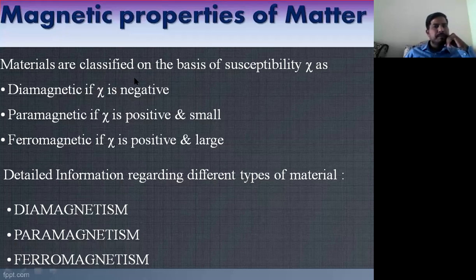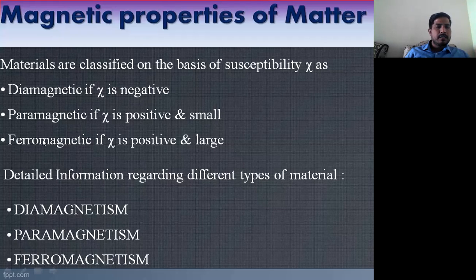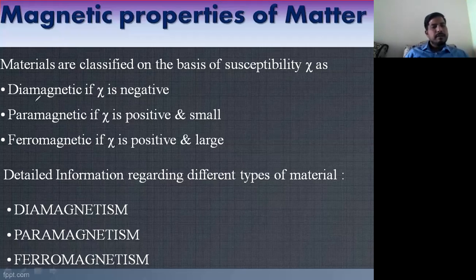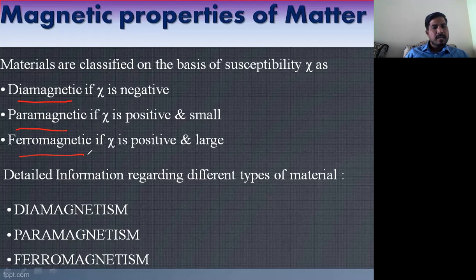Materials are classified on the basis of susceptibility as diamagnetic material, paramagnetic material, and ferromagnetic material. We are going to study all these in detail in the next classes.